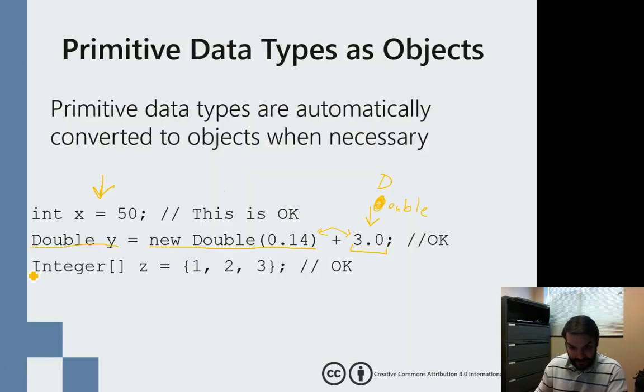And so again, you can see we can do that. We can make an array of integer, the wrapper type, and we can come in here and just say one, two, three.